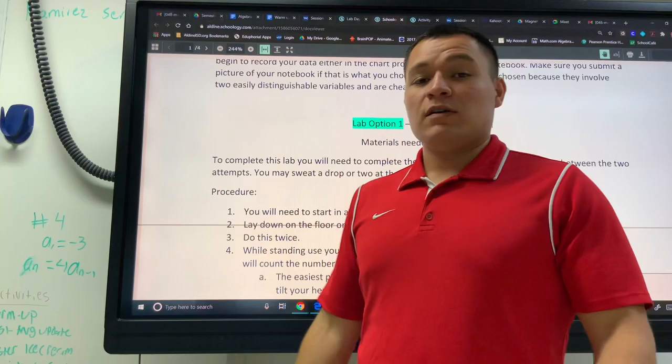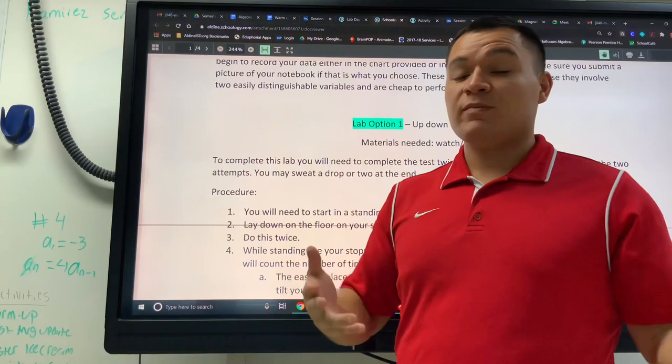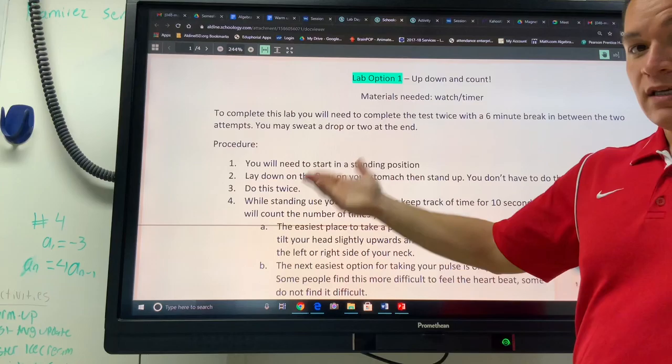These are some of the quick and easy experiments that I thought of in the past few days, and they're both cheap and easy to do. The first one, all you need in order to complete it is a watch or something to time. You're going to need to see the seconds for 10 seconds at a time, and what you're going to need to do is you're going to need to do some sort of exercise.